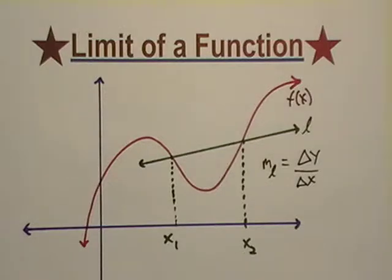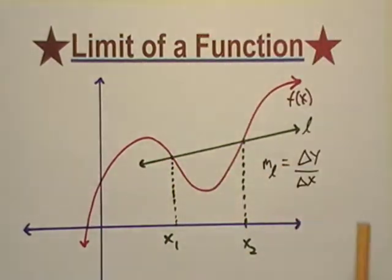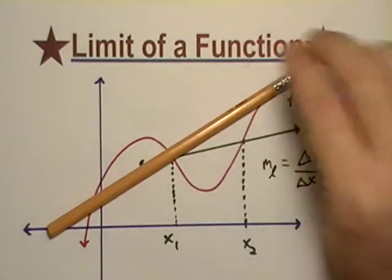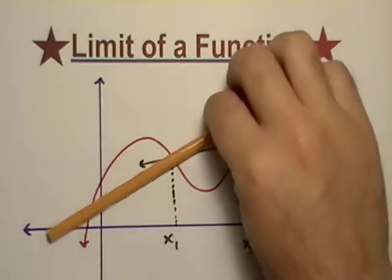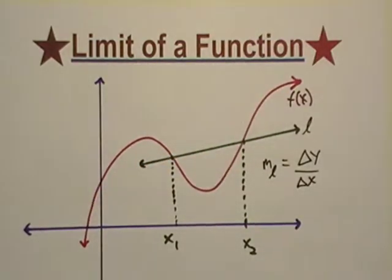A limit of a function is really the first step in calculating the rate of change of a curve. We're all familiar with the rate of change of a straight line from algebra. That's basically the change in y over the change in x. And if we apply that to a straight line, we end up with the rate of change or the slope, no matter what. It holds true for wherever the line is defined.